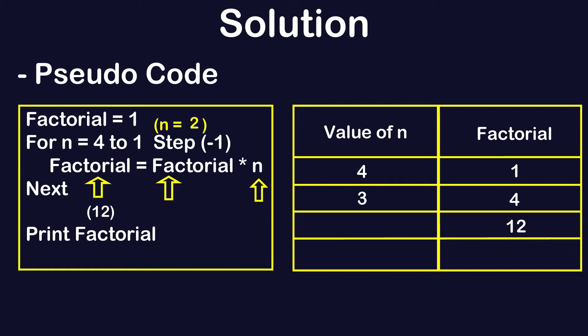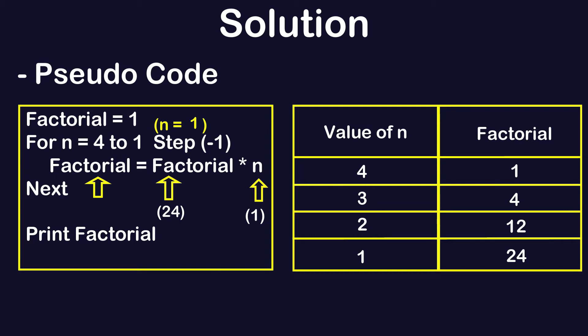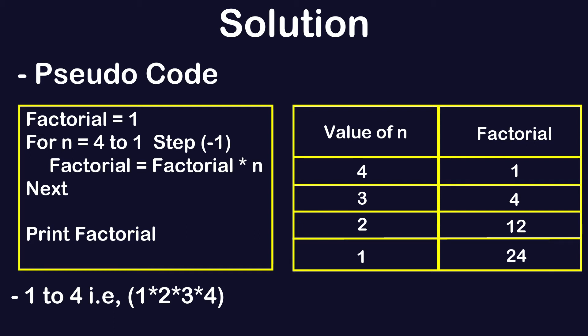Factorial becomes 12 and n becomes 2. Again, the process repeats: factorial × n is 12 × 2 = 24. n is 2, so factorial is 24, and n is decremented to 1. Then 24 × 1 = 24. At the end we just print factorial. This is how the factorial is achieved.